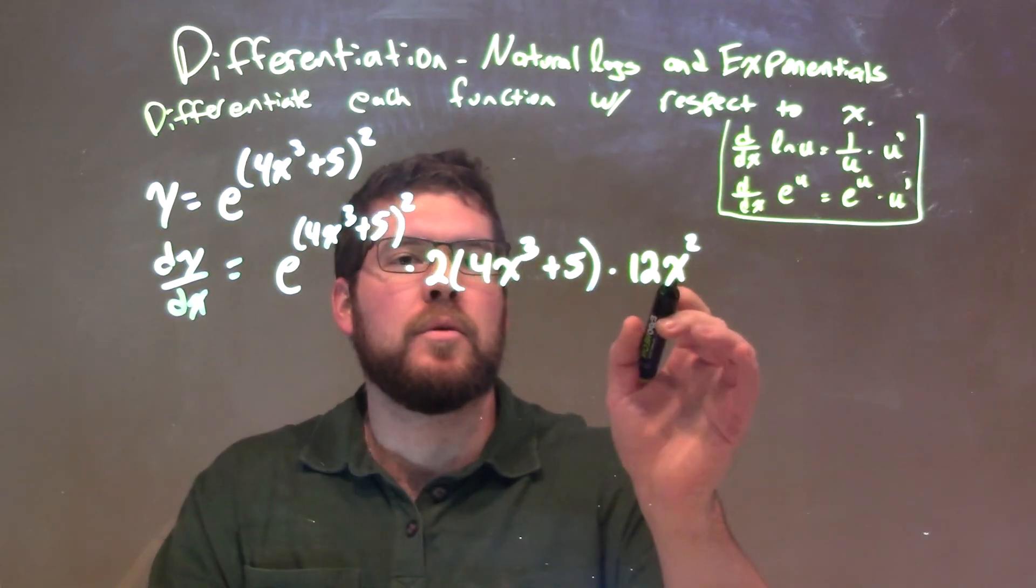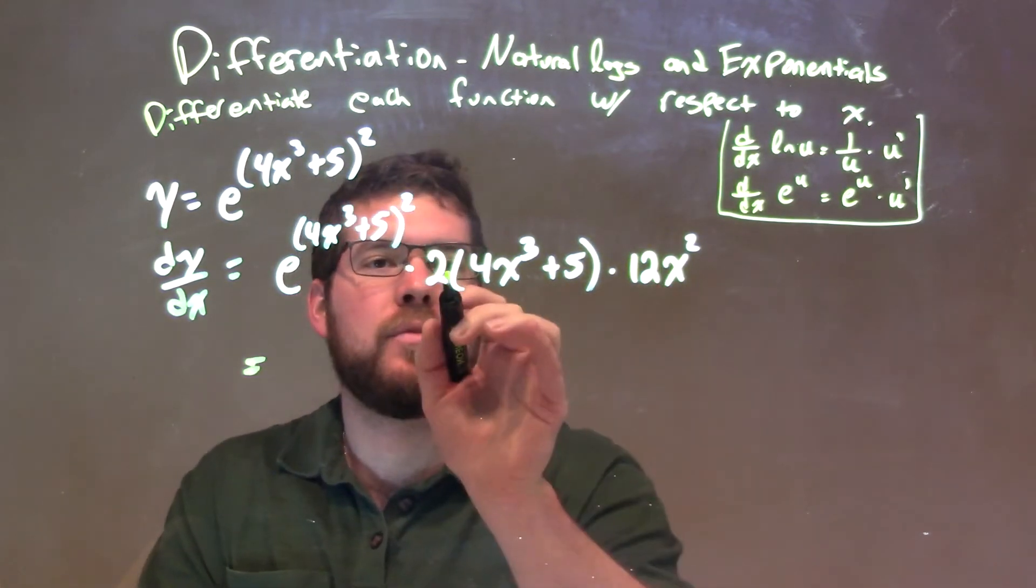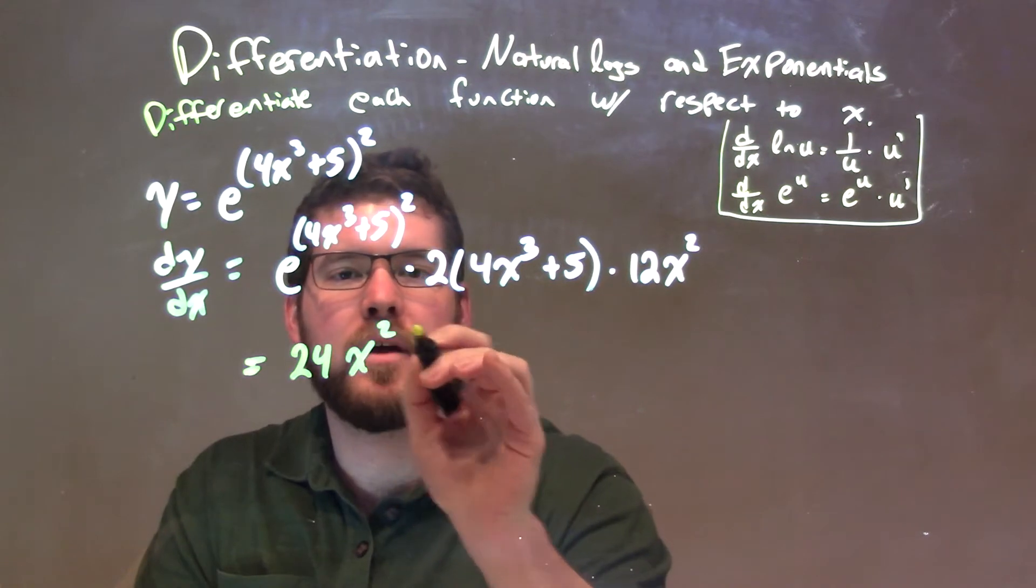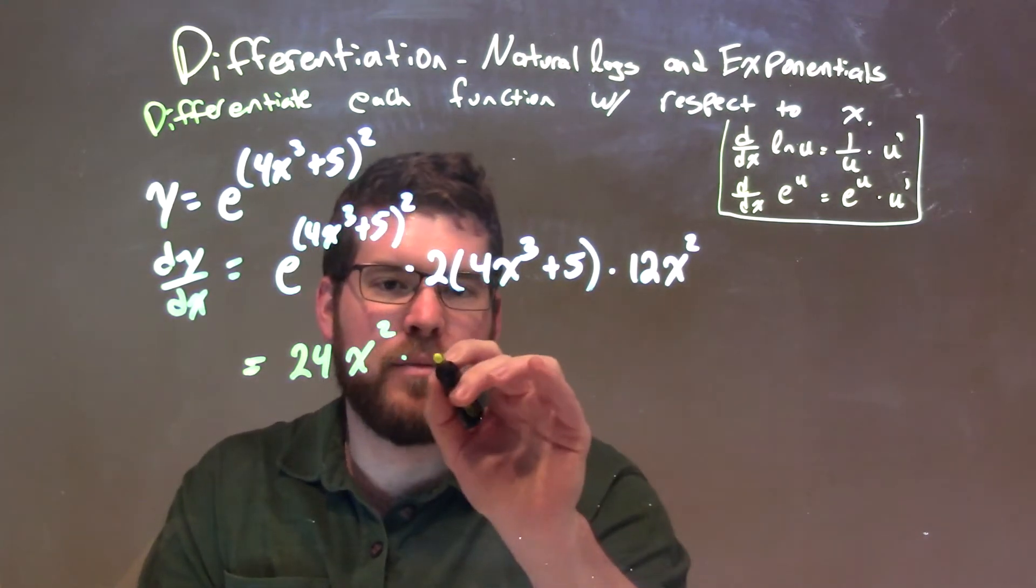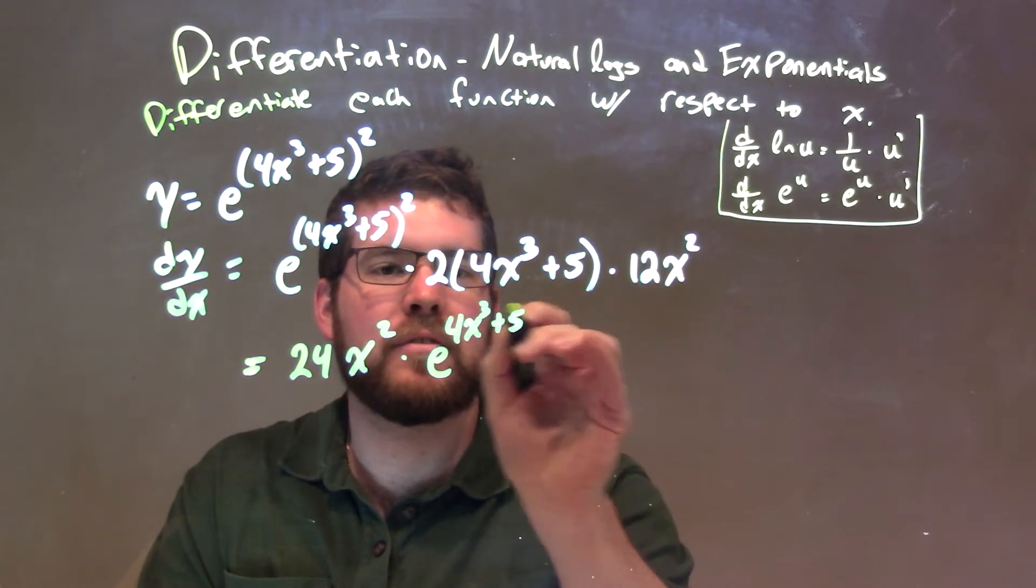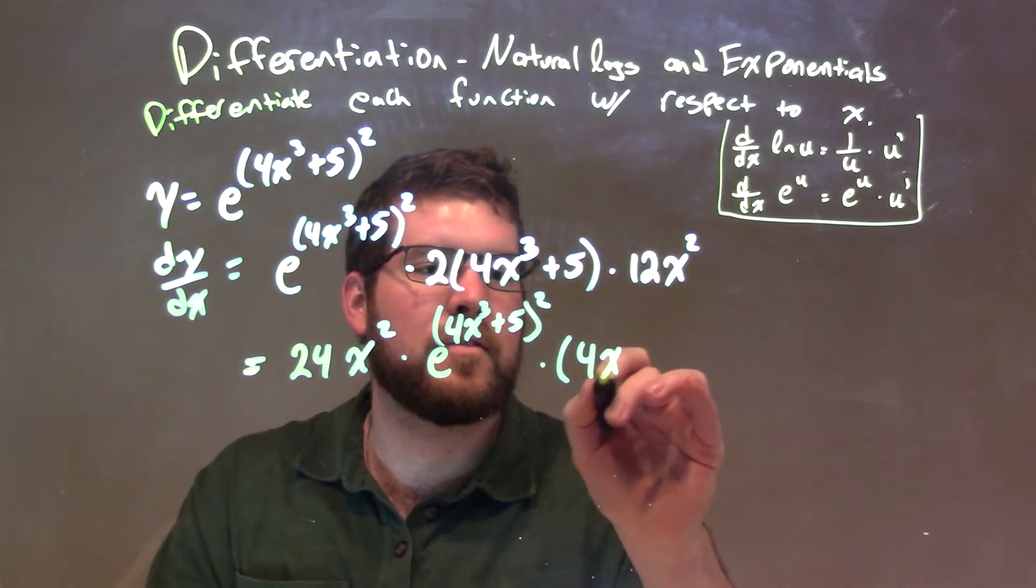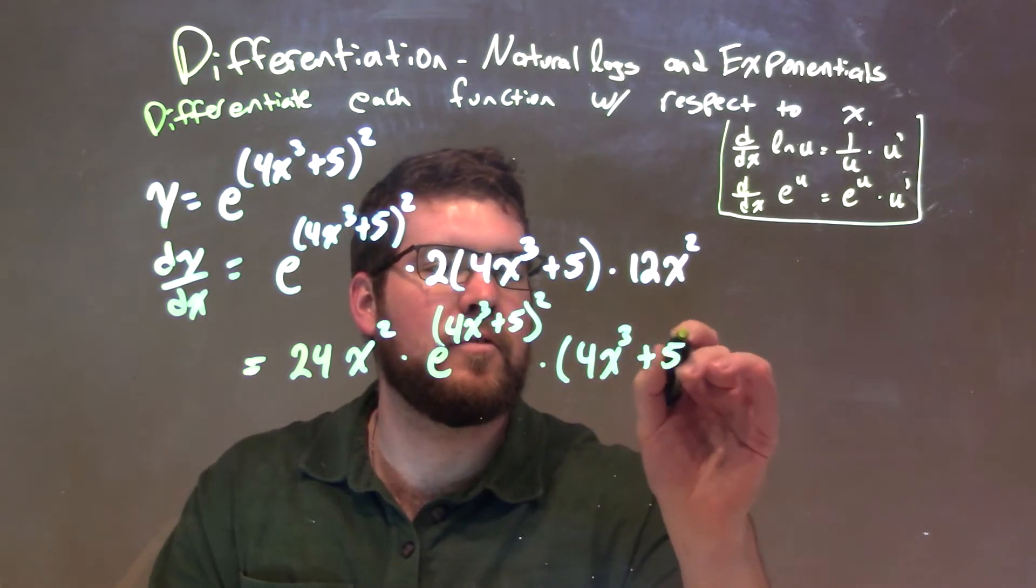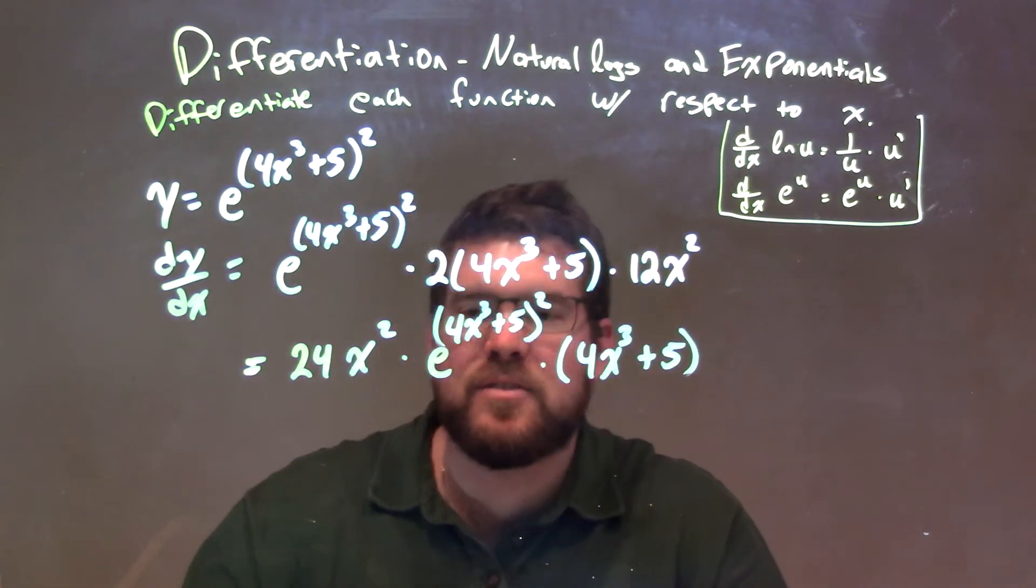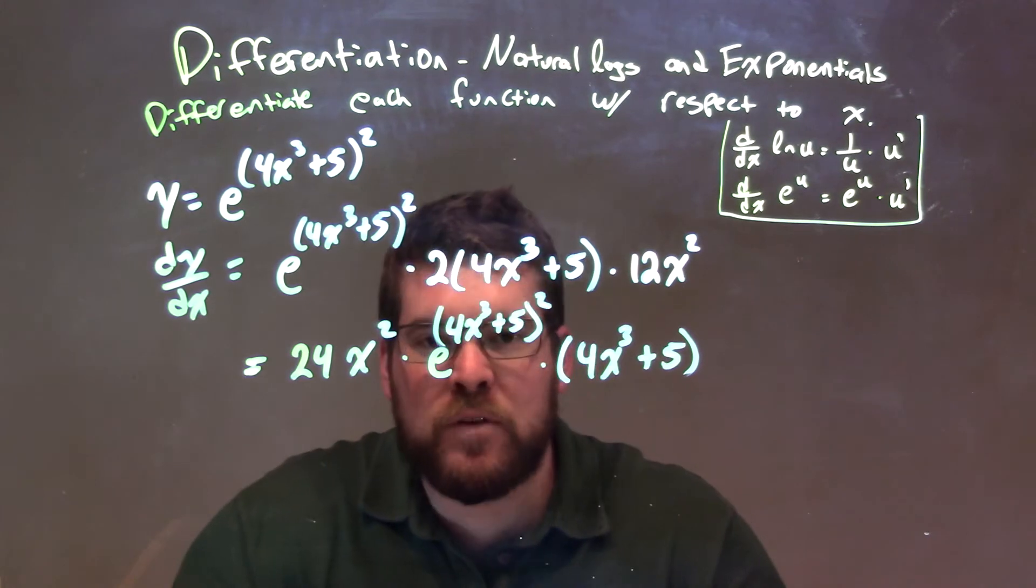So what I'm going to do is multiply the 12x times the 2 comes out front. So 2 times 12 is 24. Let's bring the x squared out front, times, let's bring down the rest: e to the 4x to the third plus 5, and all that squared, times 4x to the third plus 5 right there. Now it's up to you if you want to put that out front or how you want to write it, but since it's all multiplication, just keep each section together and you'll be fine.